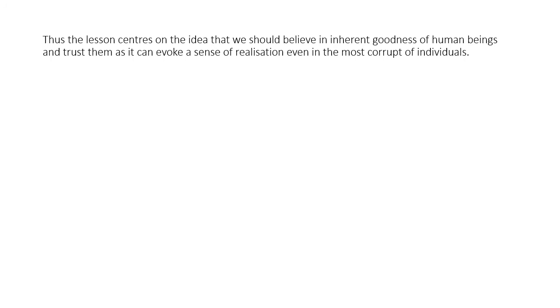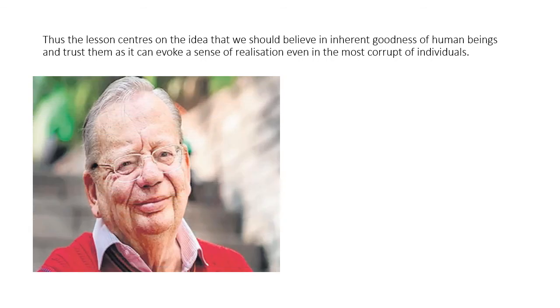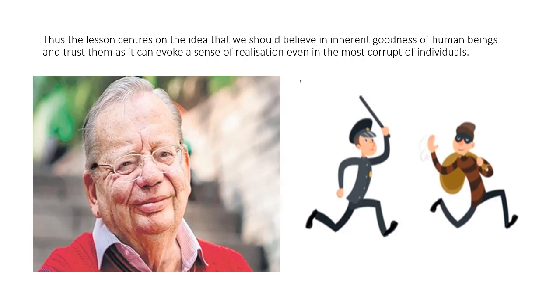The lesson written by Ruskin Bond centers on the idea that we should believe in the inherent goodness of human beings and trust them, as it is this trust which can evoke a sense of realization even in the most corrupt of individuals. So instead of making Hari come under the notice of the police, Anil tried to change the character of Hari Singh and turn him into a very good person. This beautiful story tells us that if we want, we can change a person completely.